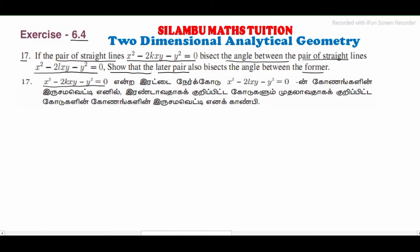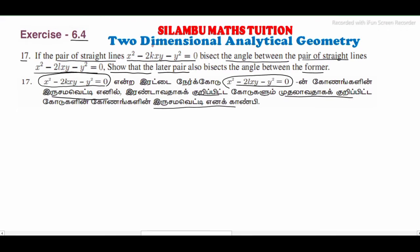The pair of straight lines x² - 2lxy - y² = 0 — if the angles of this pair and the angles of the first pair are equal (bisect each other), we need to show that. See, in the first equation, the second pair of equations acts as the angle bisector.